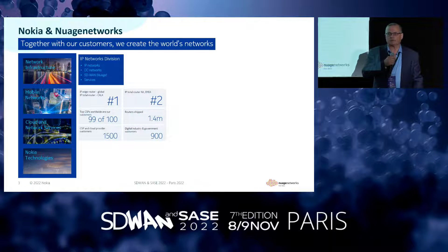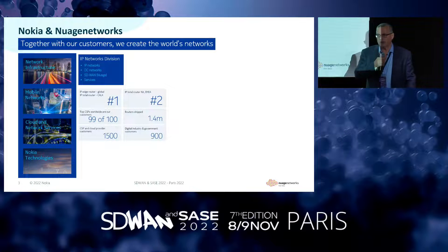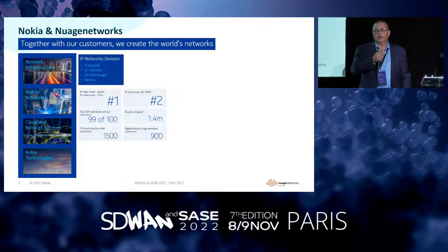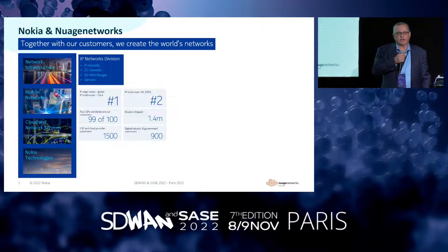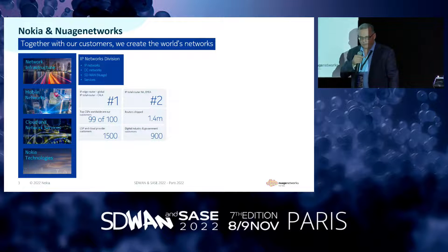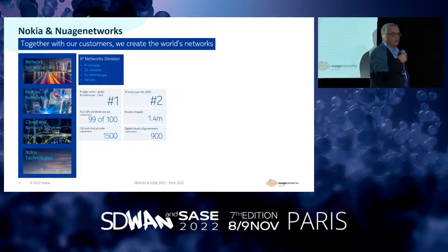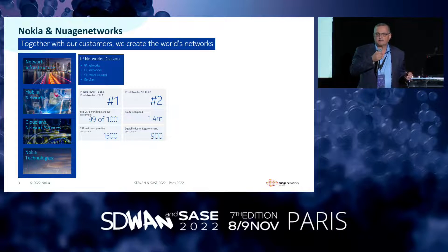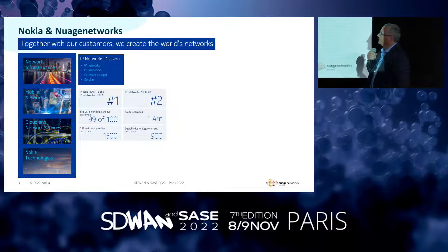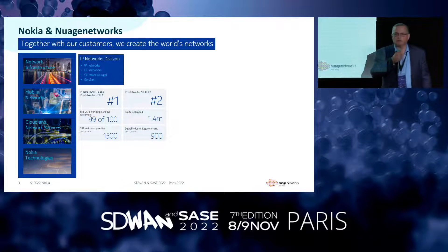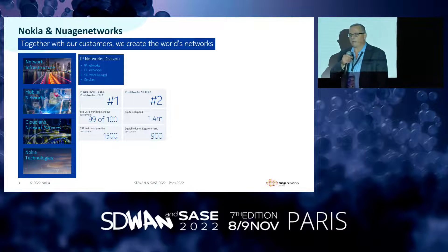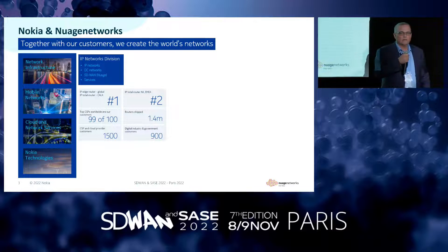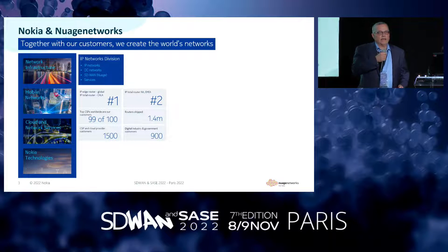Nokia's tagline is 'together with our customers we create the world's networks,' which is important especially thinking about COVID, where telecoms infrastructure was considered critical infrastructure. Nokia is organized in four business divisions: Network Infrastructure, Mobile, Cloud and Networks, and Technologies. Within the Network Infrastructure group there are four teams: Optical, IP, Submarine, and Fixed Access. Within IP Networks there are again four groups, and that's where you find SD-WAN, branded as Nuage Networks from Nokia.